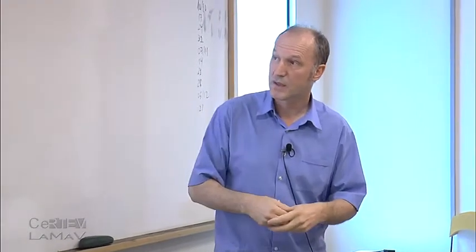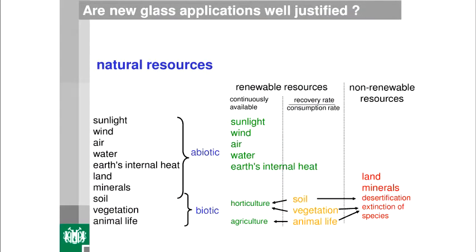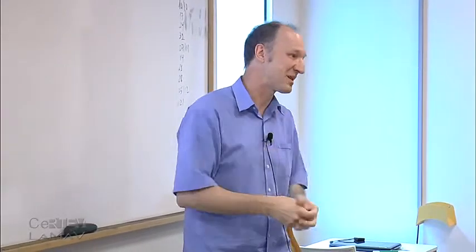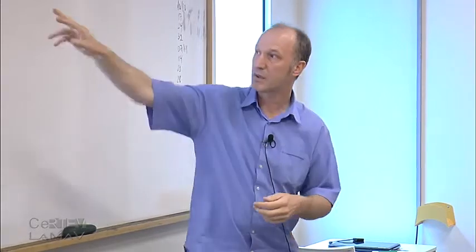Looking at natural resources — that's what we have and no more. We have sunlight, wind, air, water, internal heat of the earth — these are the abiotic resources. Then land, minerals, soil, vegetation, and animal life — these are biotic or mixed. Sunlight is continuously available for millions of years. Wind will be there, though climate change may increase or decrease it in certain regions. Air is there, though its composition changes — oxygen levels, CO2 increases. Water will be there, clean or polluted.